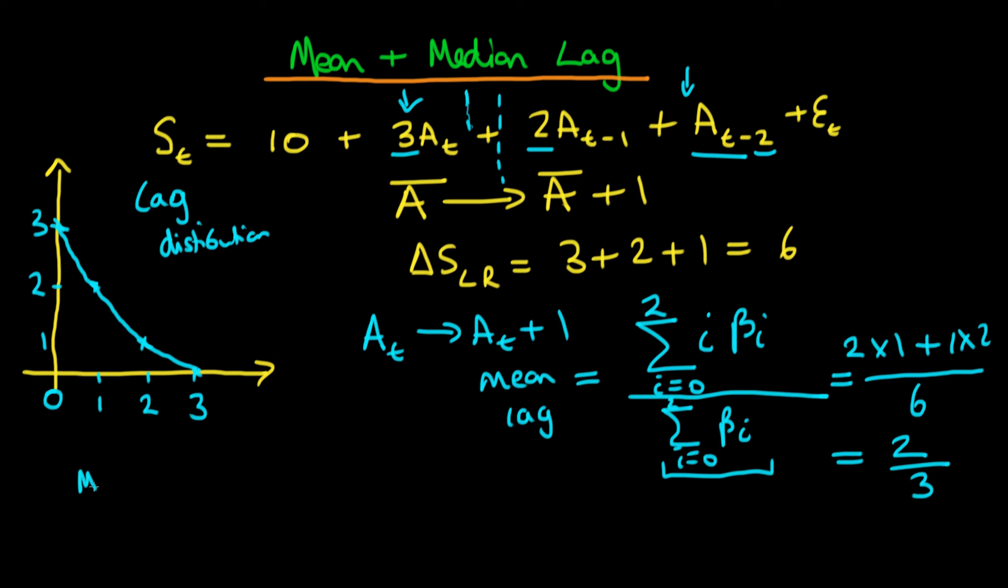The median lag by contrast is a slightly different term. If we call the median lag c, it's defined as the lag such that 50 percent of the adjustment in the dependent variable has been made.